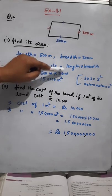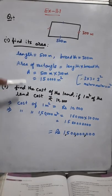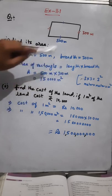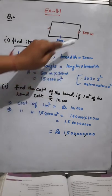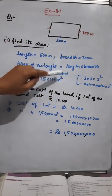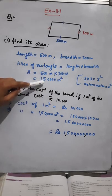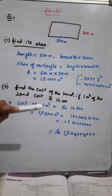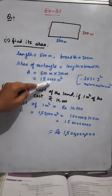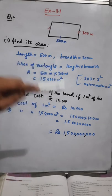Area of a rectangle is length into breadth. So area is equal to length 500 meters into breadth 300 meters. 500 into 300: five threes are fifteen, and four zeros, so it will be one lakh fifty thousand meter square.